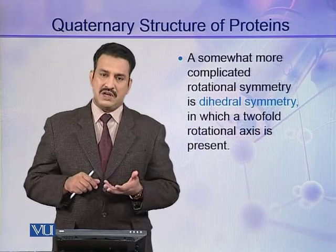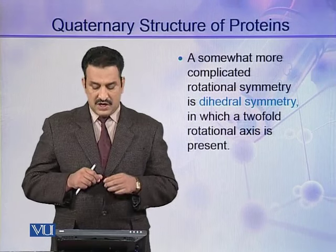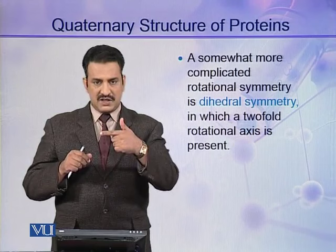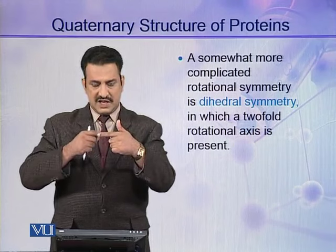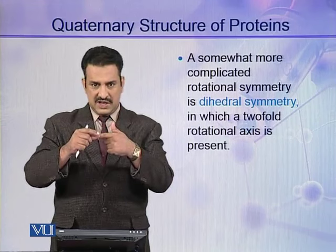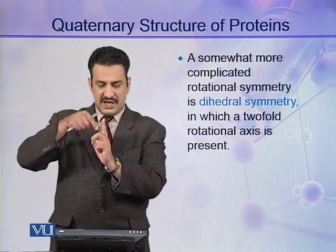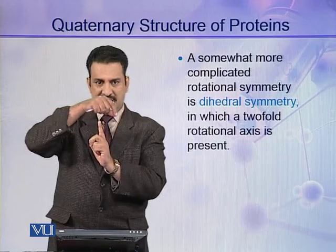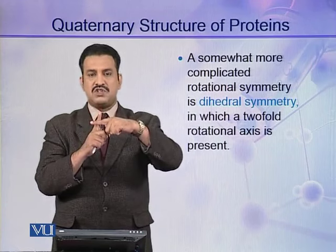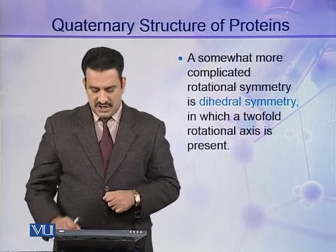A somewhat more complicated rotational symmetry is dihedral symmetry. In dihedral symmetry, a two-fold rotational axis is present. That means there is one rotational axis with protomers arranged around it, and in the same molecule there may be another rotational axis. These two rotational axes are normally at right angles to each other, and such symmetry is called dihedral symmetry.